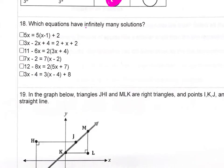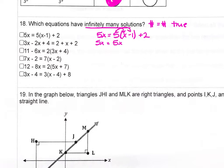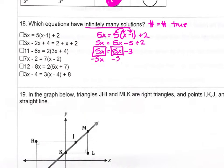We want to know which equations have infinitely many solutions — that means we'll get a number equal to a number and it will be true. For the first one, 5x equals 5 times (x minus 1) plus 2. Using the distributive property we get 5x minus 5 plus 2, so 5x equals 5x minus 3. We end up with 0 equals negative 3, which is false. So that one does not have infinitely many solutions.